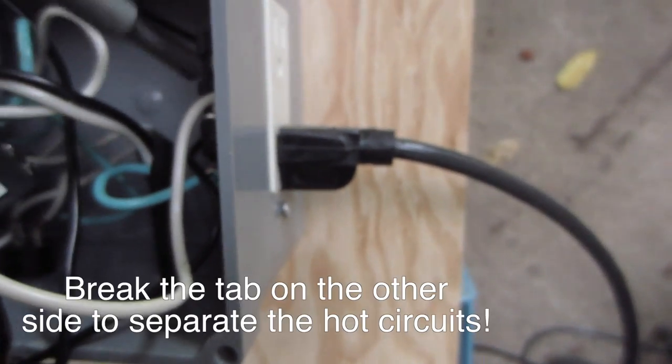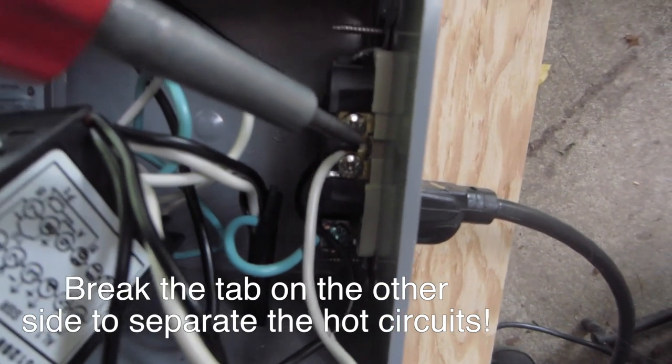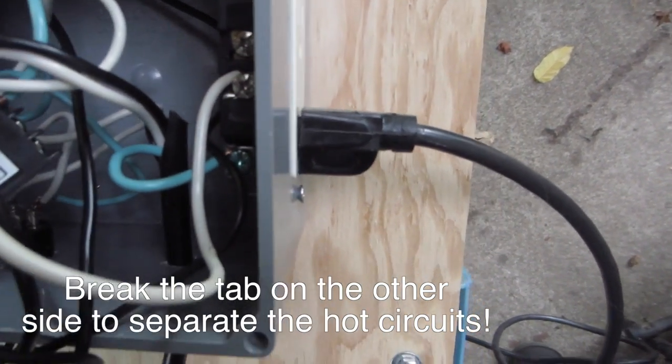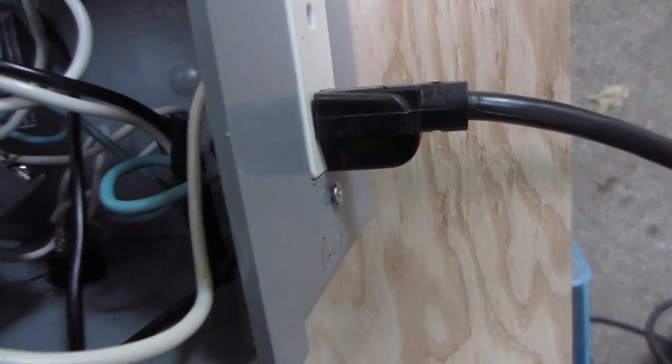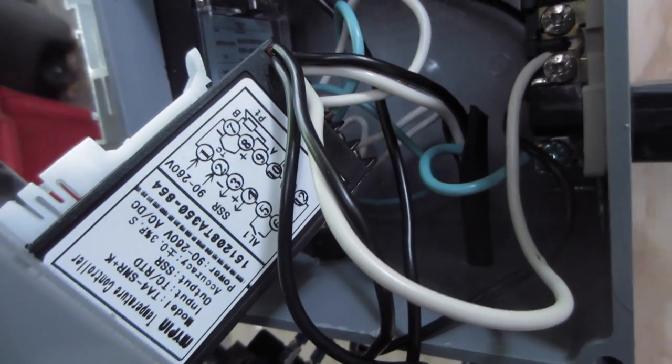And then the neutral is distributed with this. You can see the little tabs still there, and that distributes the neutral to both of those right there. The SSR control are pins three and four right there. Negative to the negative on the corresponding SSR. I use white wires for that.